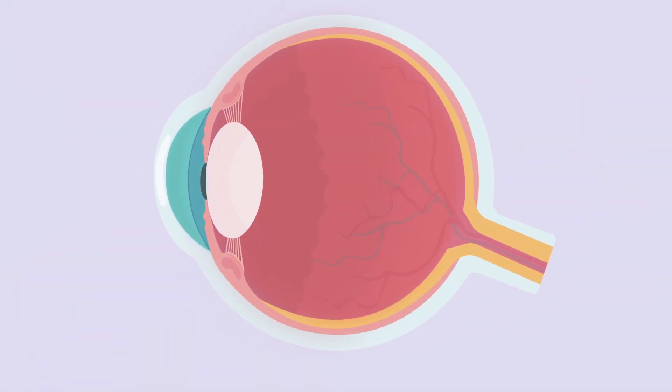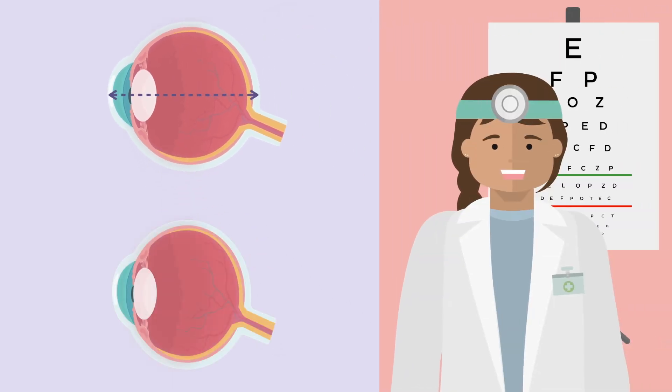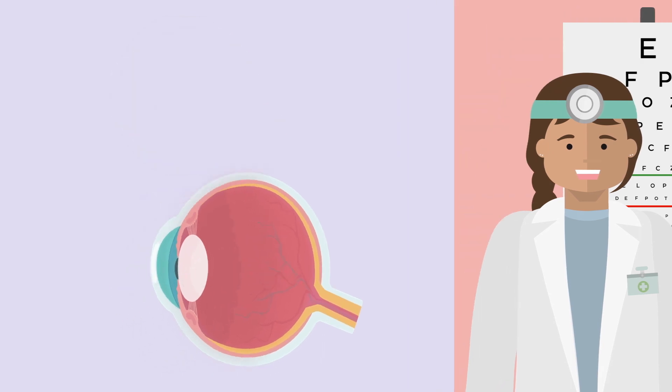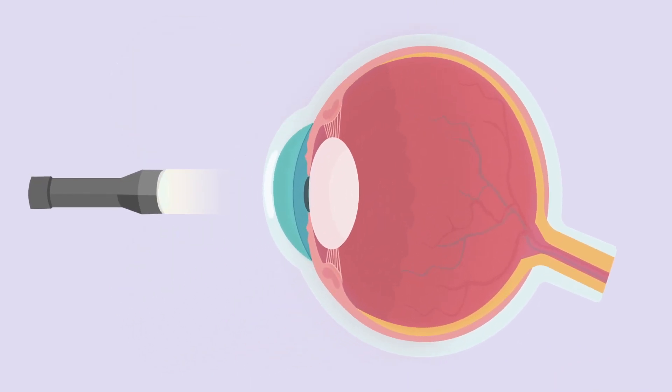For example, the anteroposterior length of the eyeball, known by ophthalmologists as axial length, can be decreased. So even though the cornea and lens cause normal refraction of the light rays, they converge to a point behind the retina since that structure is located more anterior than it should be.